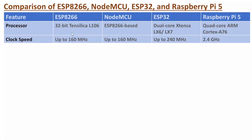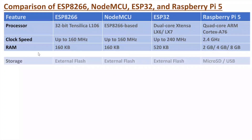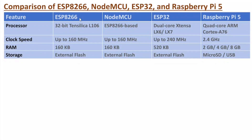If you talk about clock speed, ESP8266 and NodeMCU have a clock speed up to 160 MHz. ESP32 has a clock speed up to 240 MHz. Raspberry Pi 5 has a very high clock speed up to 2.4 GHz, so it can handle complex tasks. In terms of RAM, ESP8266 and NodeMCU have 160 KB, ESP32 has 520 KB, while Raspberry Pi 5 is available with 2 GB, 4 GB, and 8 GB of RAM. For storage, ESP8266, NodeMCU, and ESP32 use external flash, while Raspberry Pi 5 uses a microSD card and can also interface memory via USB.